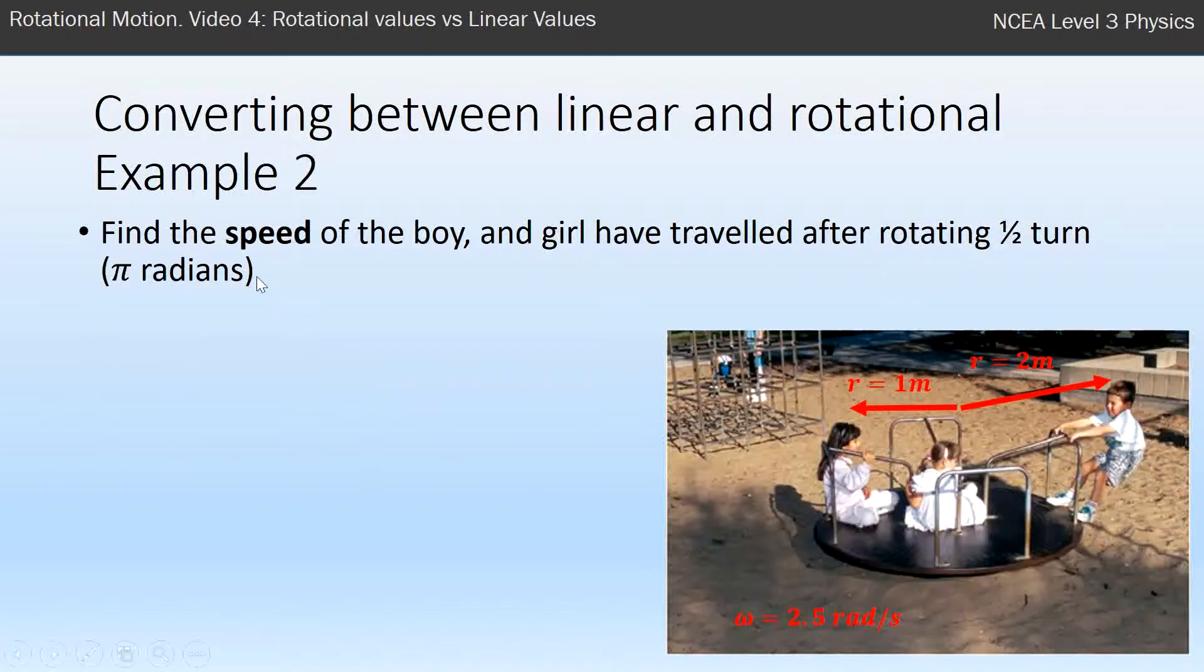We could also find the speed of both the boy and the girl using our formulas given to you a couple of slides ago. The boy with the radius of two, all we need to do is find his angular frequency or angular speed, which is 2.5 radians per second, and multiply by the radius, which gives us five meters per second.